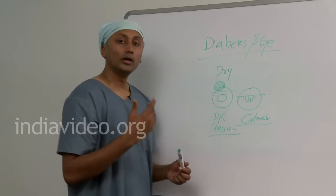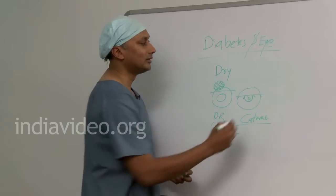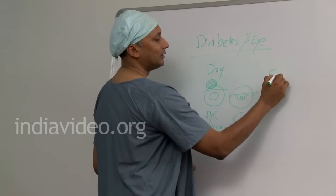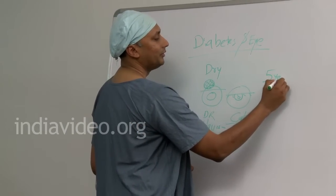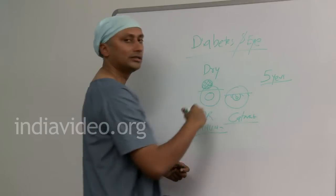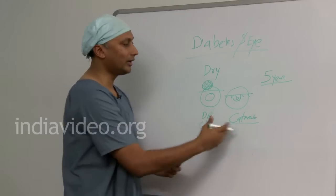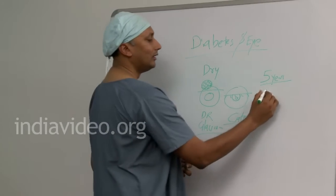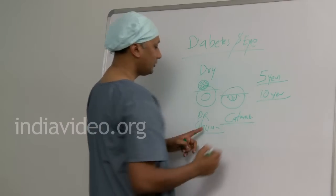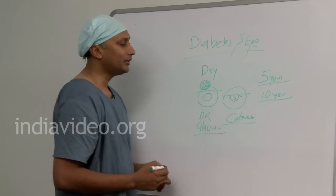Who are at risk for developing diabetes-related eye diseases? One factor is the duration of diabetes. If it is 5 years or more, there is a chance of developing dry eye, eye boils, or cataract. If it is 10 years and above, the risk of diabetic retinopathy or glaucoma is very high.